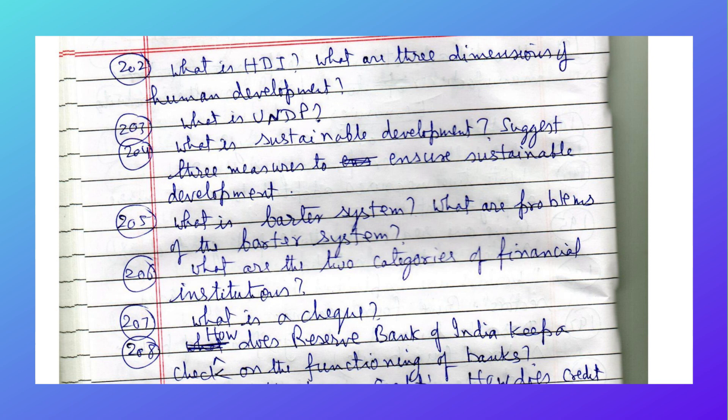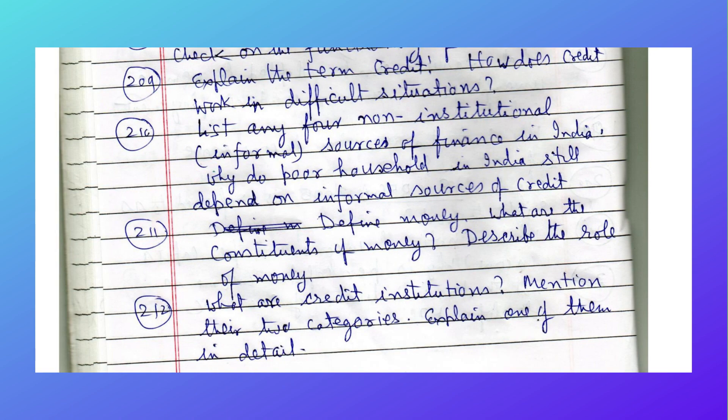What is UNDP? What is sustainable development? Suggest three measures to ensure sustainable development. What is the barter system and what are its problems? What are the two categories of financial institutions? What is a cheque? How does the Reserve Bank of India keep a check on the functioning of banks? Explain the term credit and how credit works in difficult situations.